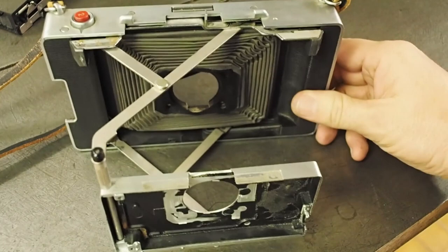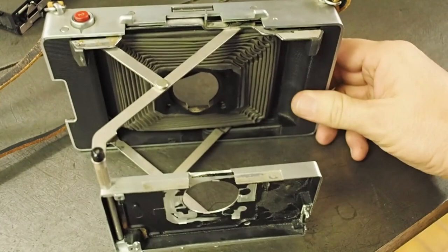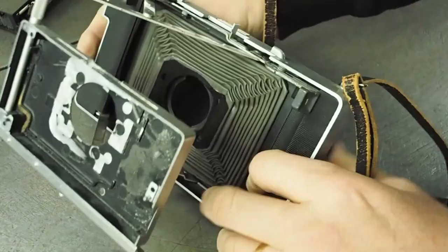And here is a Polaroid 100 land camera, stripped down, ready to be mated up to that back.